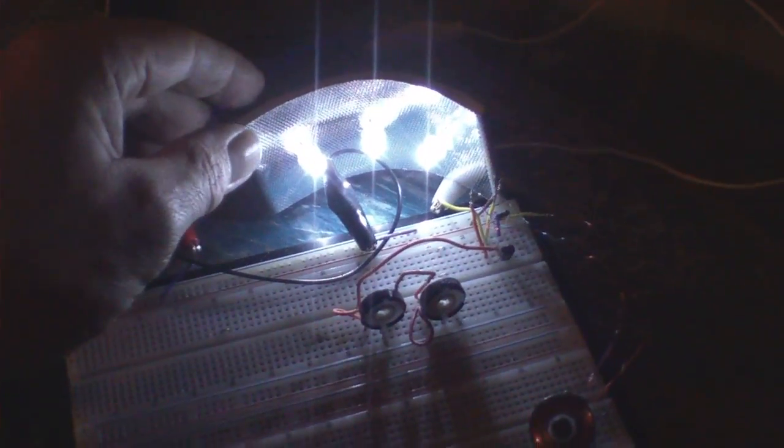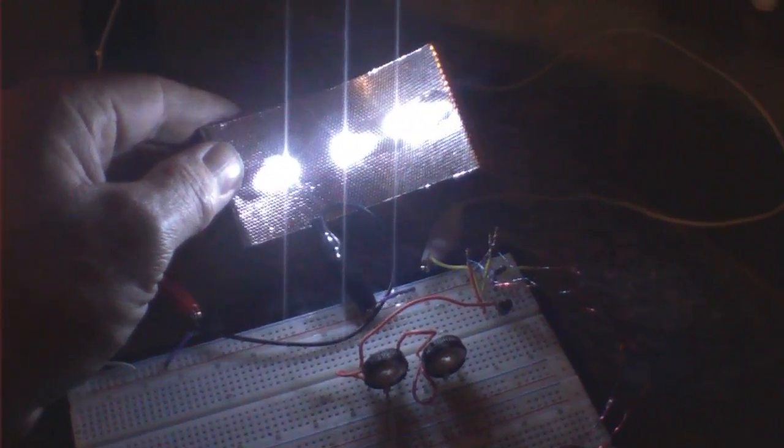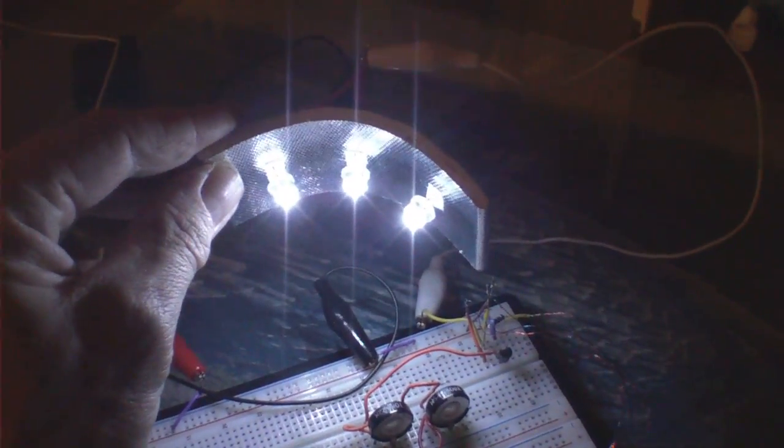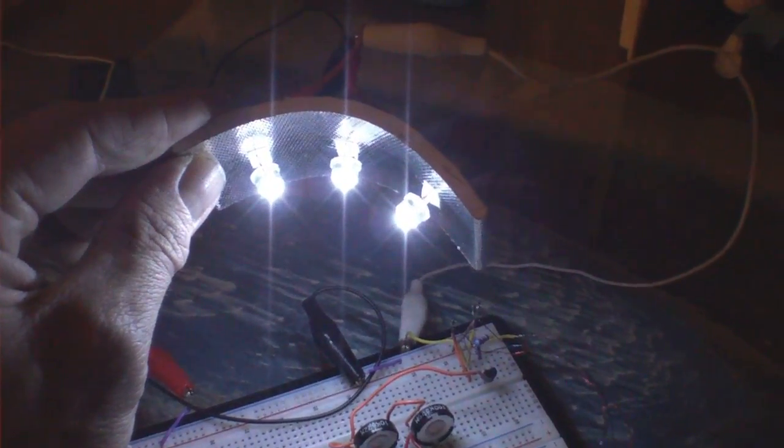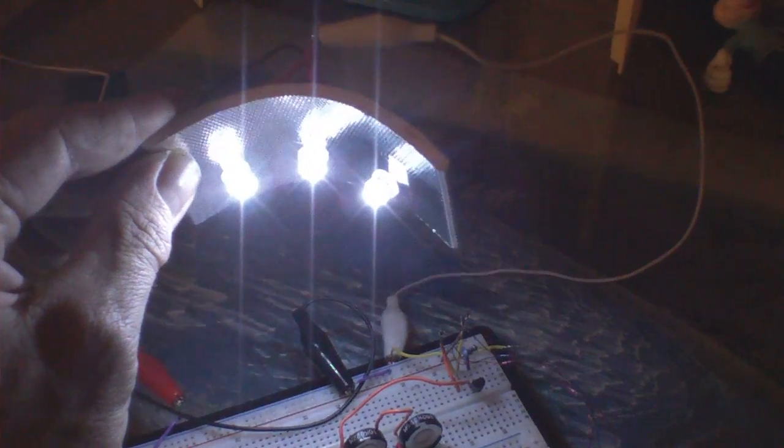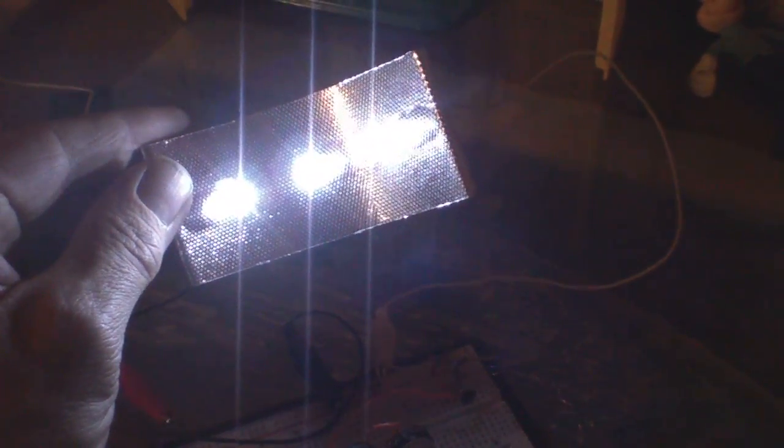Okay, so here's my latest little under one watt lamp. What I've done is I've switched to what they call 8 millimeter straw hats, and they have a 140 degree angle.